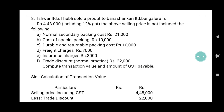Ishwar Limited of Hubli sold a product to Banshankari Limited, Bangalore, for rupees 4 lakh 48,000, which includes 12 percent GST. So Ishwar Limited, a Hubli company, sold a product to Banshankari Limited, a Bangalore company, for ₹4,48,000, and GST is included at 12 percent. The above selling price does not include the following items.